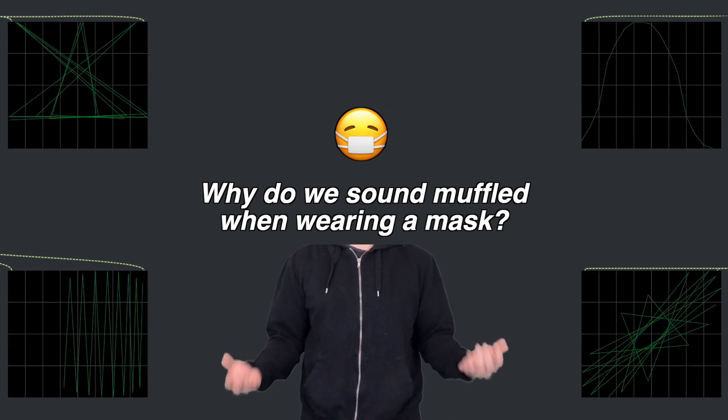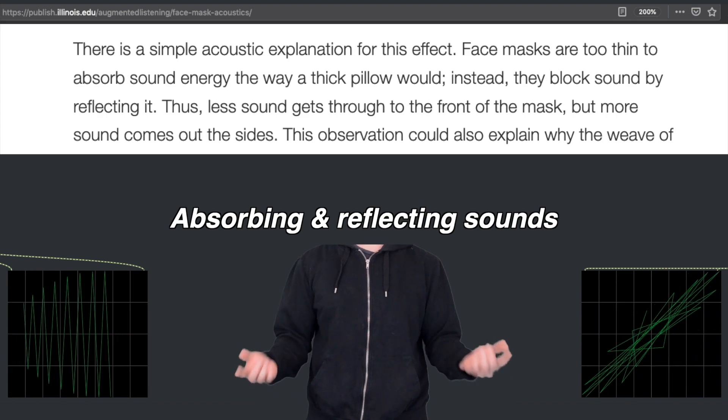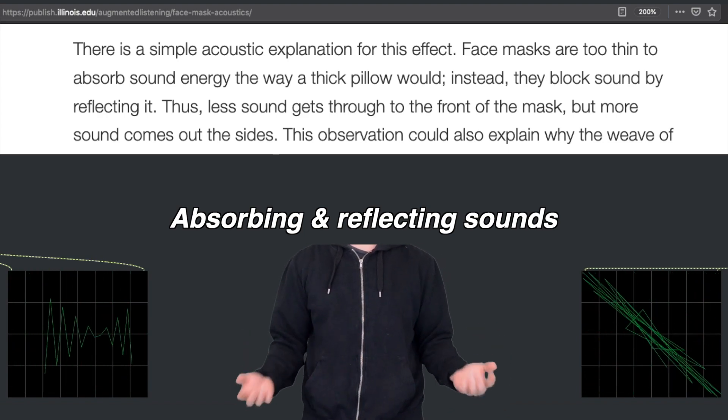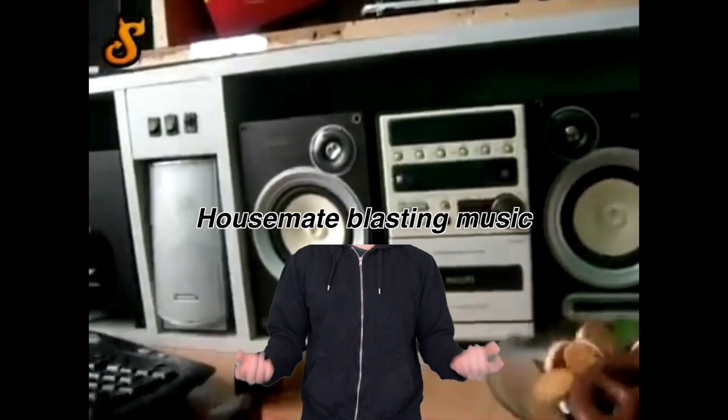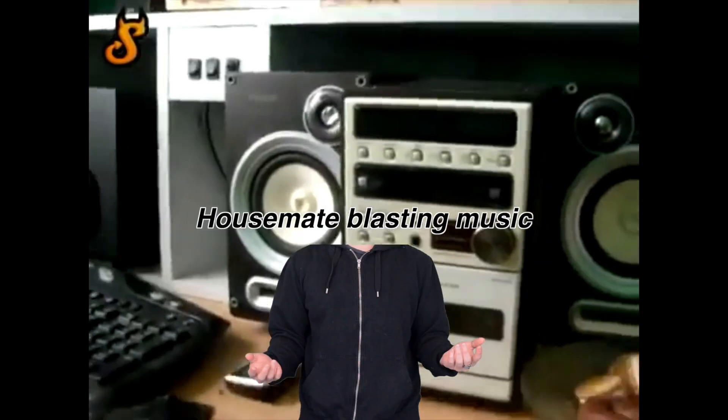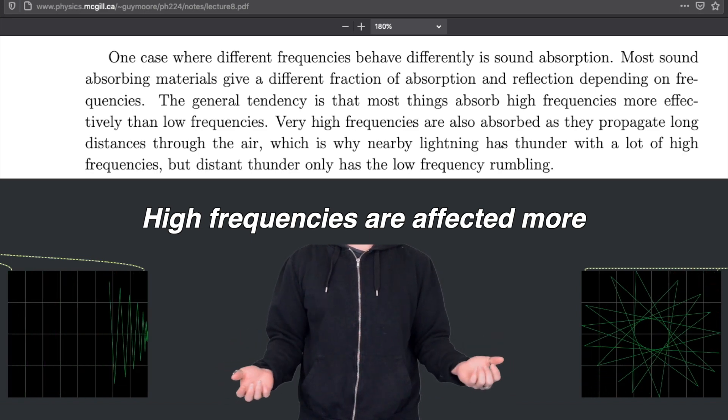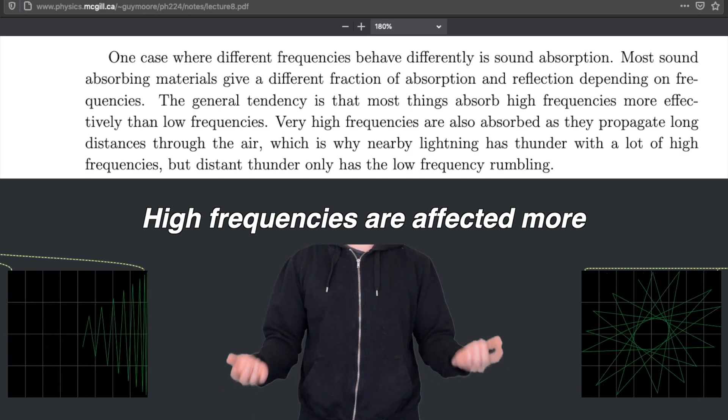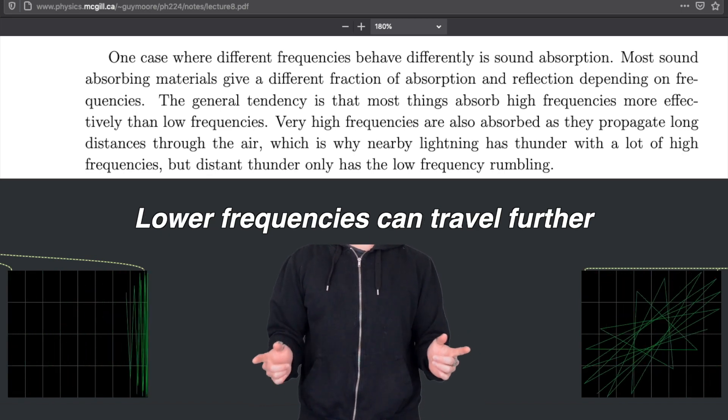Why do we sound muffled when we talk through a mask? What's happening here is that the mask is both absorbing and reflecting the high-frequency contents of the voice. This is similar to what happens when your housemate in the next room is blasting music and it sounds muffled in your room. The high-frequency contents of the music, such as cymbals, are absorbed and reflected by the walls, and lower frequencies can travel further.